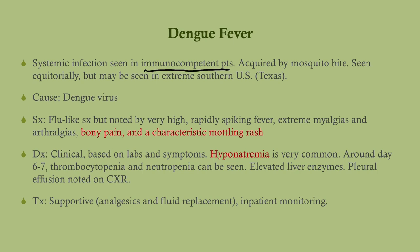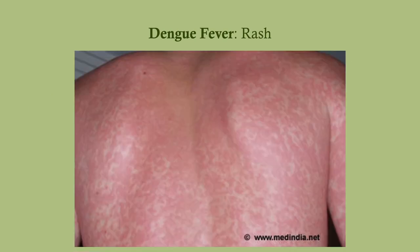The symptoms include severe, very high fever. This is often called 'breakbone fever' because it causes arthralgias, myalgias, and bone pain. It also causes a characteristic mottling rash. Some other findings include hyponatremia, depression of platelets and white cells, and elevated liver enzymes — though you won't necessarily see all of these. Treatment is supportive.